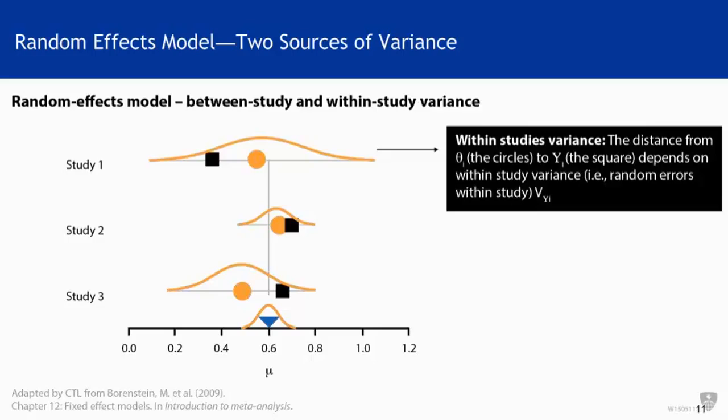The first source is within-study variance. The distance from theta i, the circle, to yi, the square, depends on the within-study variance — the random errors within that study. We have exactly the same within-study variance from the fixed effect model. On top of that, there is another level of variance: the between-study variance. The distance from mu, the triangle, to each theta i, the circles, depends on the variance of the distribution of true effects across studies. We call that variance tau squared.